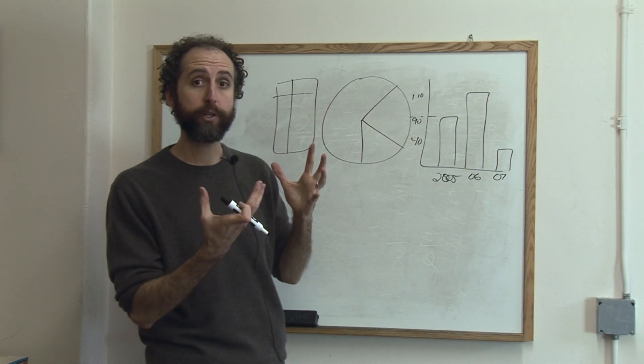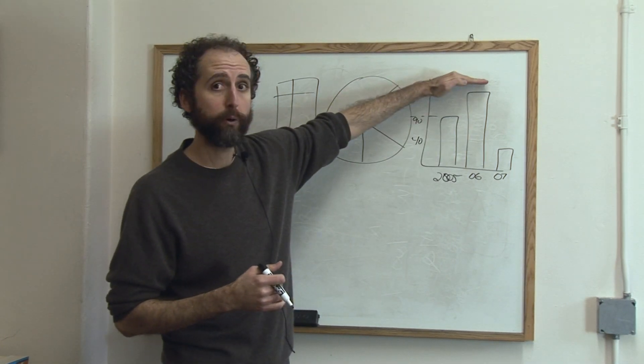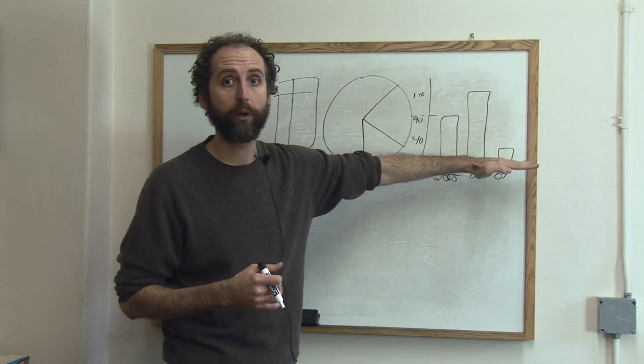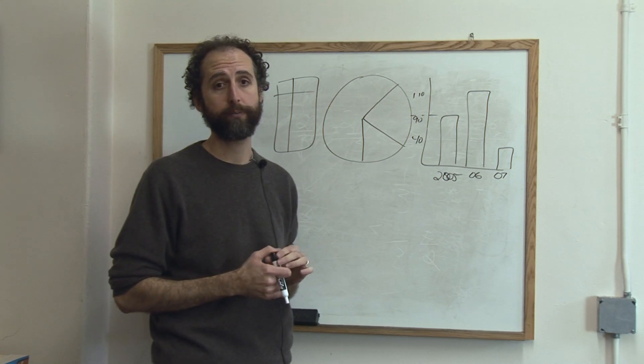Because it'll immediately jump off the page at them to say, oh, 2005 was the middle, 2006 was a good snow year, 2007 was real low. And if that's the point you want to make, then that's your best choice as far as a graph.